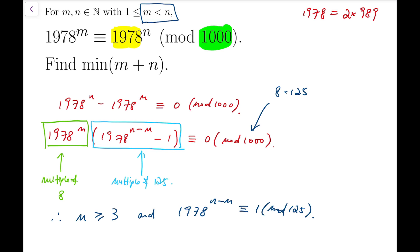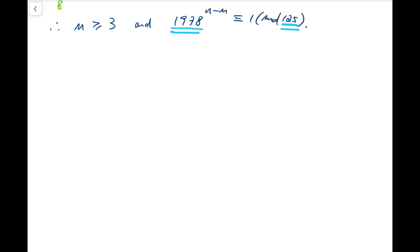Now from this, we can use our previous tools, because the base and number we are divided by, numbers underlined in light blue color, they are coprime. So we can use Euler's theorem and order. From this congruent equation, we know that n minus m must be a multiple of the order of 1978 mod 125. Now the question is, what would the order be? If we have this number, then we can start to have more clue on finding the minimum values of m and n.